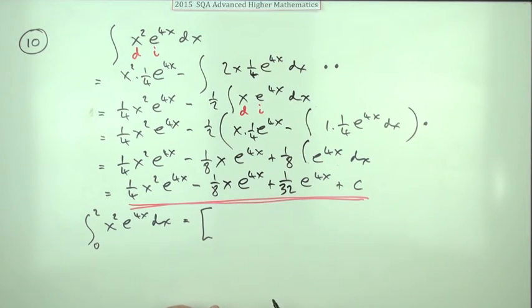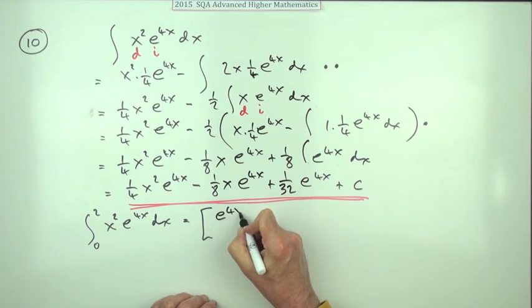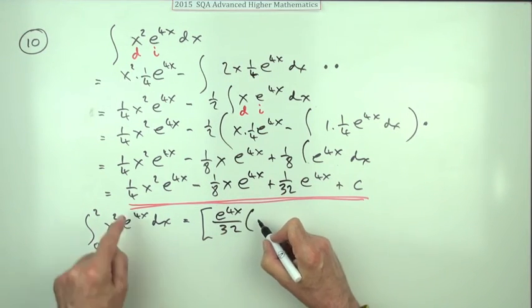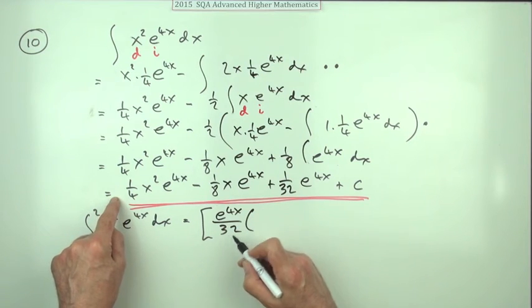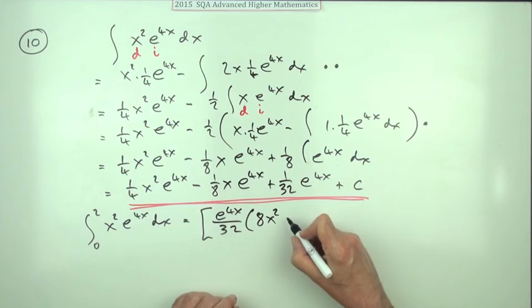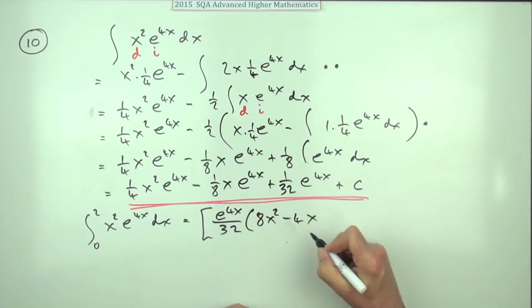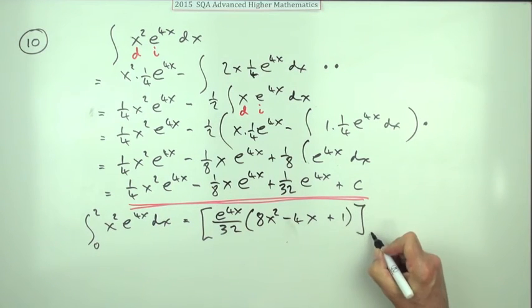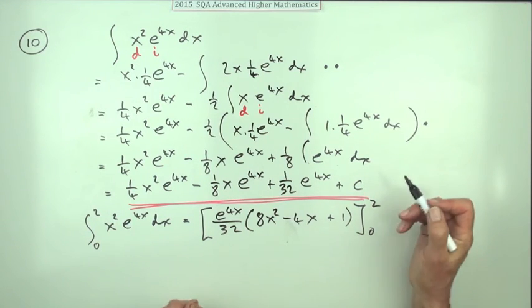So e to the 4x over 32 times, so I still need that'll have to be an 8 for the x squared. Dividing that in. That'll be a minus 4x for that term. But that will just be plus 1. This gets evaluated from 0 to 2. Still not the fourth mark as it says.